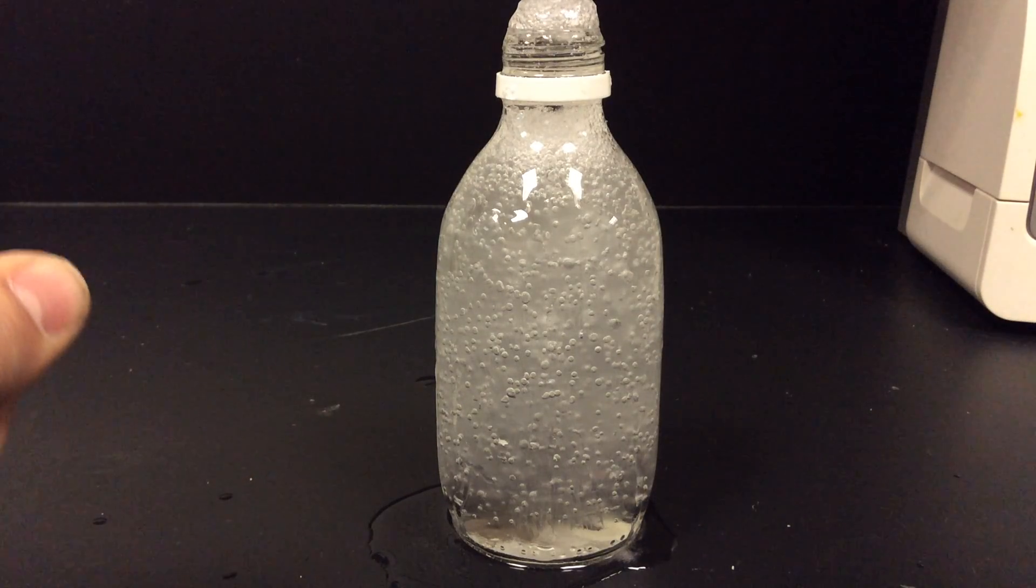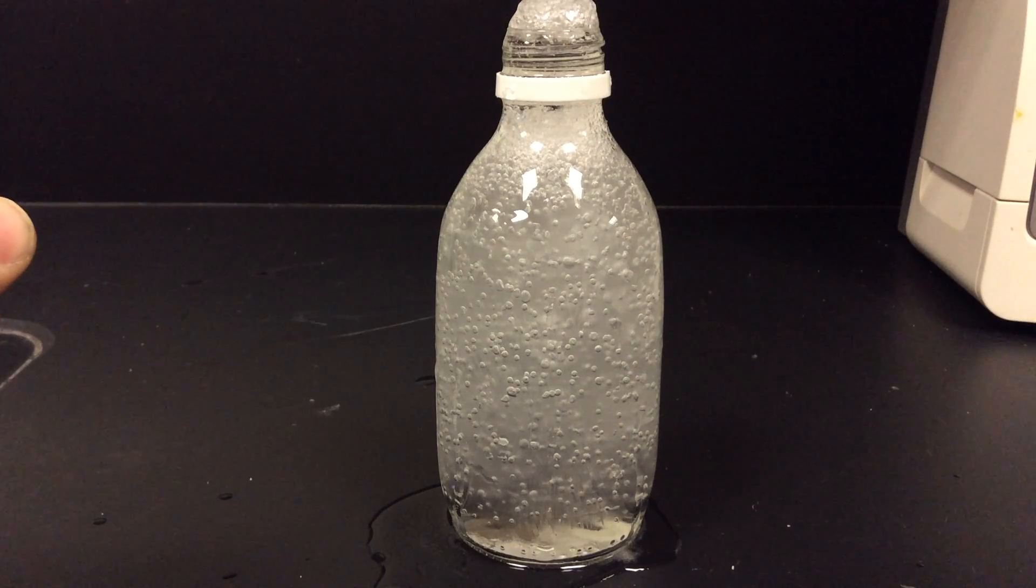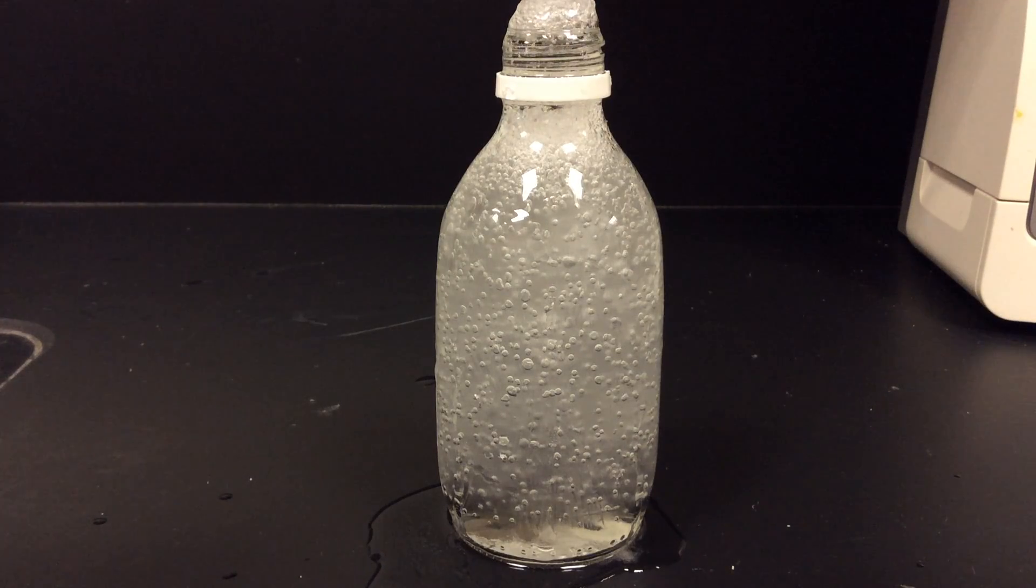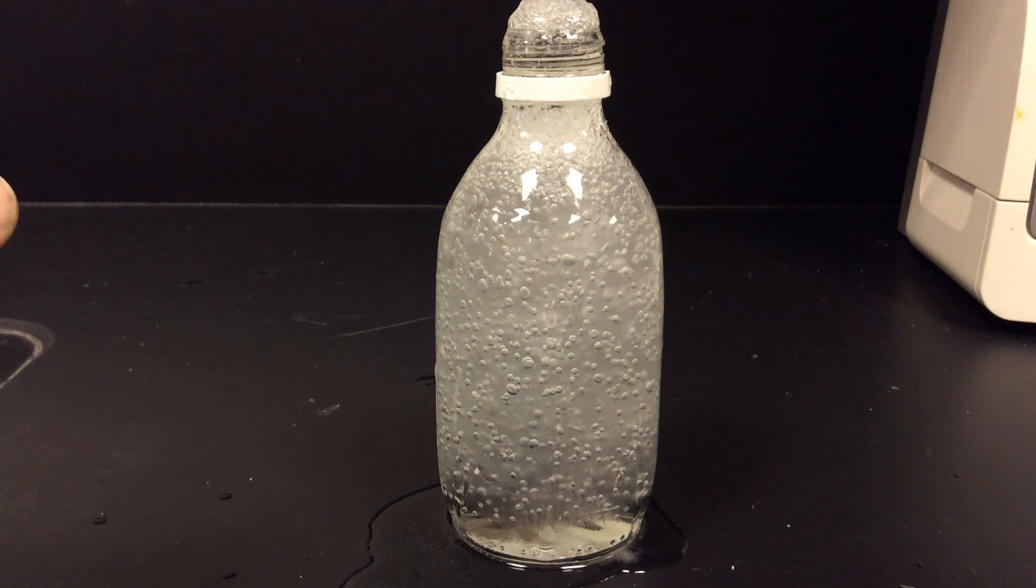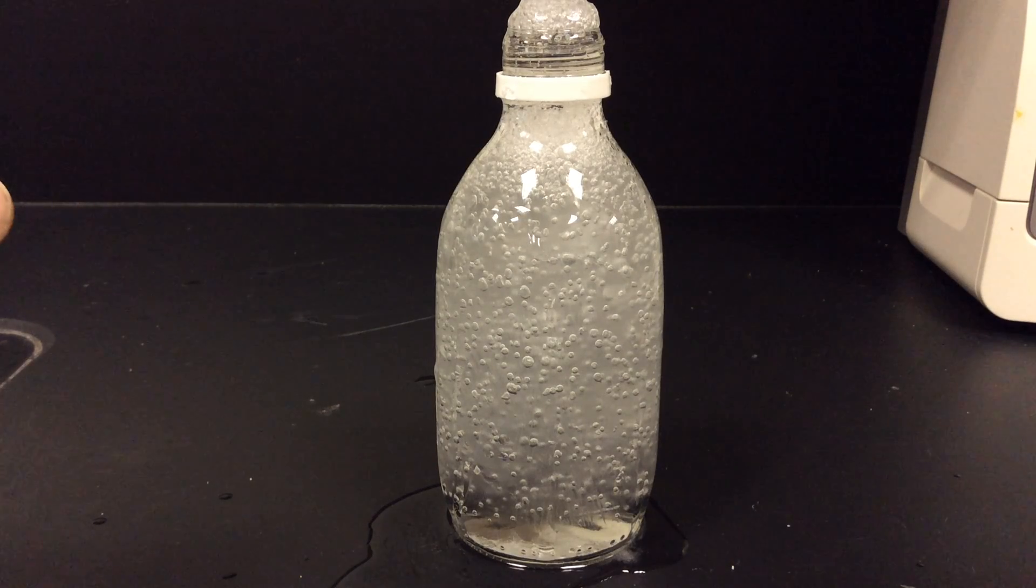So again, just by taking out the solute particles, the CO2 left, those particles which are not in the way of the water anymore, allows the water to form its crystal positions, ice, at a certain temperature.